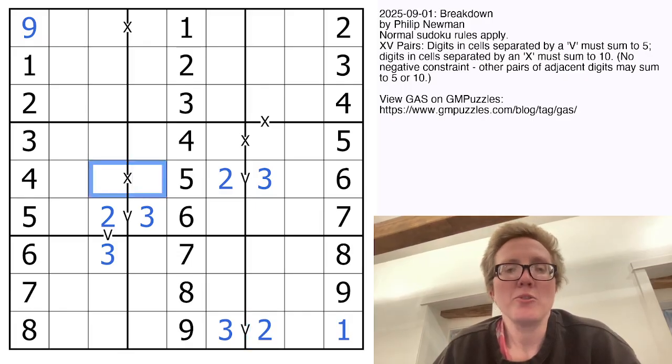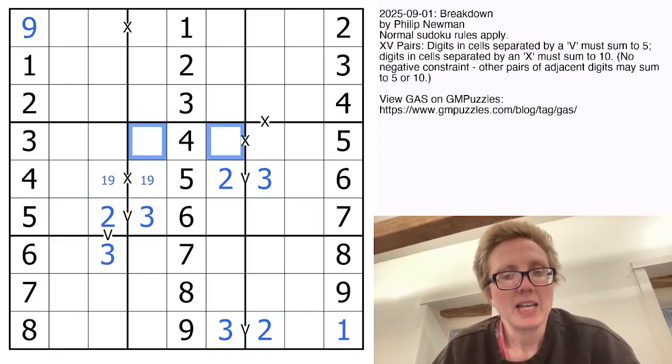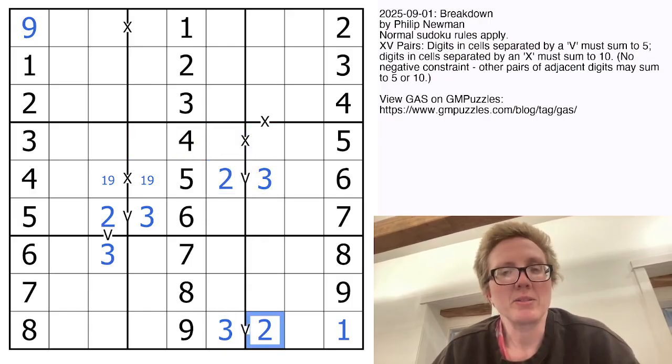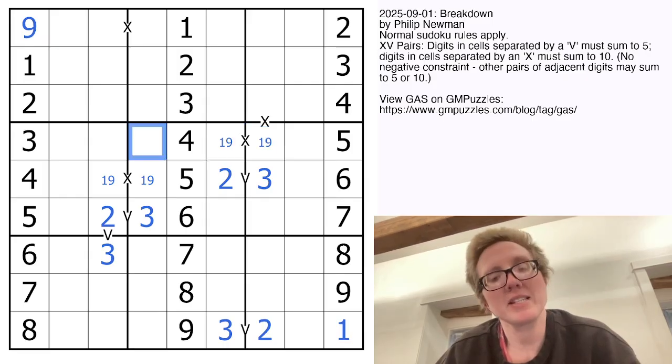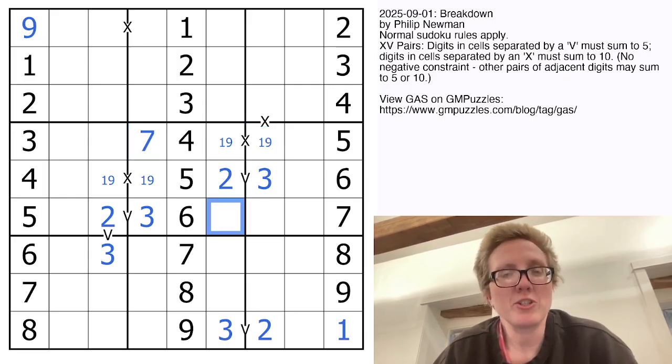Now we can't use a 2, a 3, or a 4 to make this sum of 10, so it has to be 1 plus 9. And these guys can't use a 2, a 3, or a 4, because we have 3s in both of these columns and 2s in both of these columns, so this also has to be 1 plus 9. This is now the only position for 7 in the region, and then this is the only position for 8 in the region.